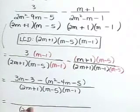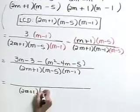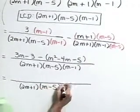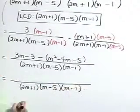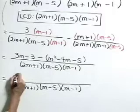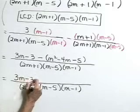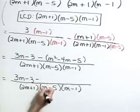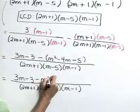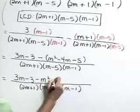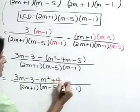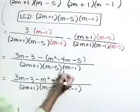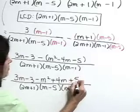As the next step, let's just recopy that denominator and continue to simplify the numerator. I'm going to distribute that minus sign through. So we have a 3m minus 3 minus m squared minus a negative 4m is plus 4m minus a negative 5 is plus 5.